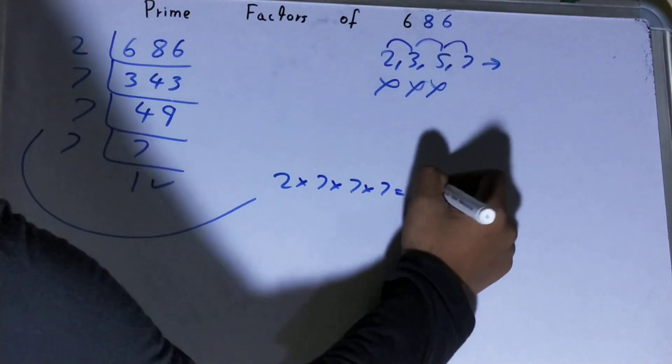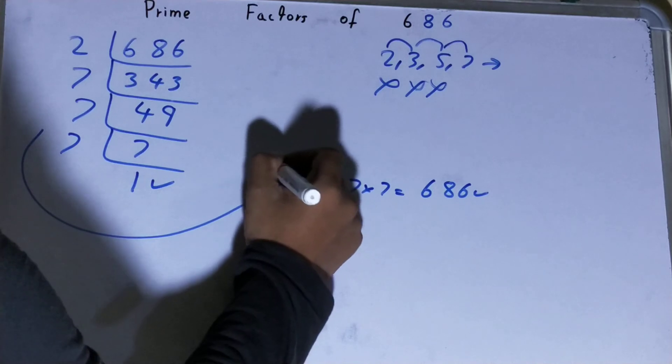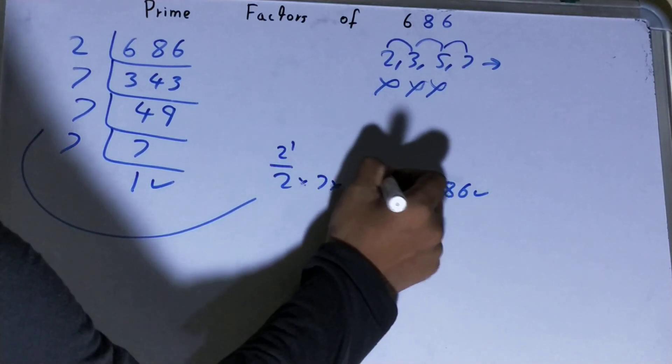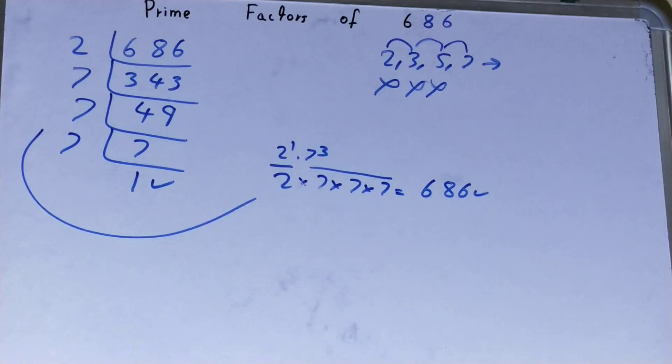If on multiplying you get the number back again, that means your calculation is correct. If not, you need to recheck. You can also rewrite it in a different way. You have one 2, so you can write it as 2^1. You have three 7s, so you can write it as 7^3. You can write it this way or that way, it's up to you.